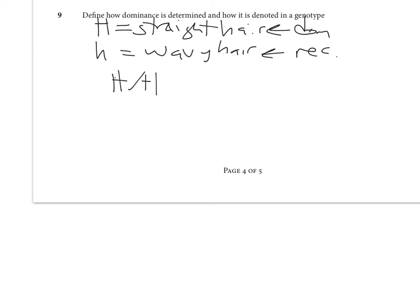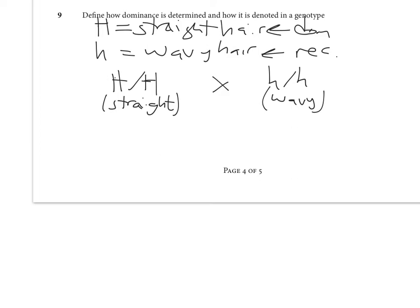If you take an individual that's homozygous capital H, their phenotype is straight hair. That's a purebreeding individual — if they selfed, they'd only produce offspring with the same genotype. If this is a plant and you cross it with an individual that's purebreeding for wavy hair, all their offspring are capital H over lowercase h — 100% heterozygotes in the F1 generation.